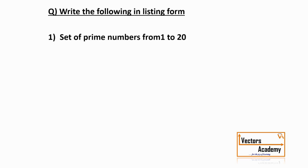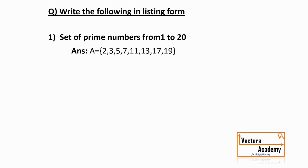Let us have a few questions. The first question: a set of prime numbers from 1 to 20 — we have to write the set in listing form or roster form, meaning we have to list all the elements. So set A contains all the prime numbers: 2, 3, 5, 7, 11, 13, 17, and 19. These are all the prime numbers from 1 to 20.